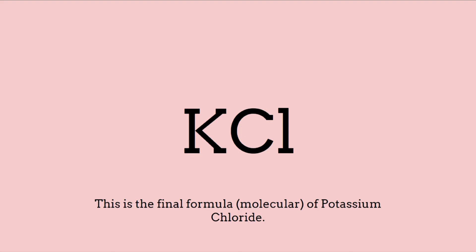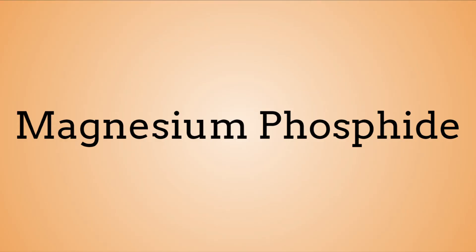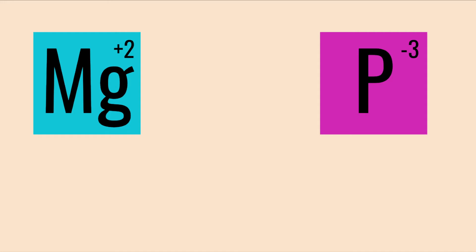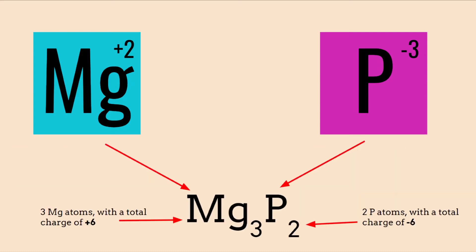Taking a more complex one, magnesium phosphide. We take the name and break it down into two atoms, magnesium and phosphorus. Magnesium has a charge of plus two, and phosphorus has a charge of negative three. So how do we get these even? We add more atoms. Having three magnesium atoms and two phosphorus atoms cancels out the charge perfectly.